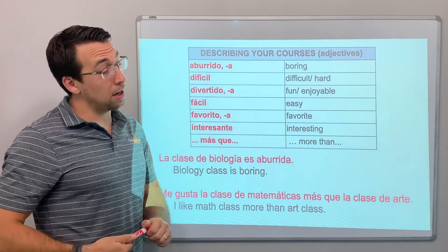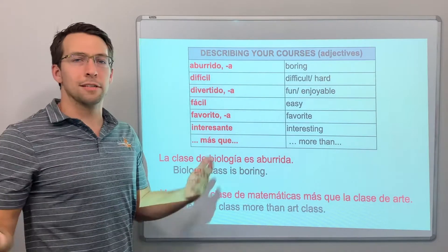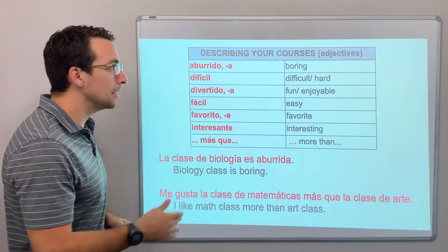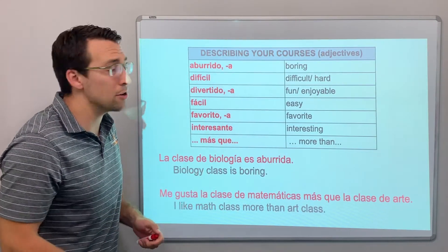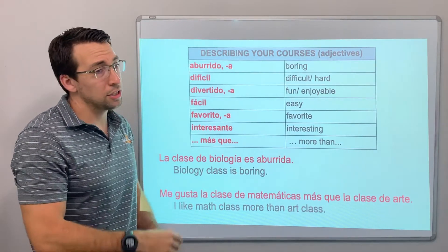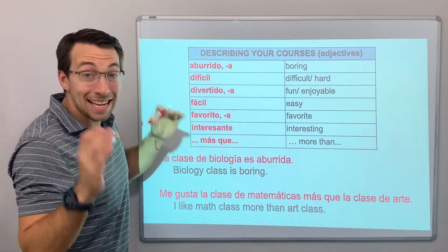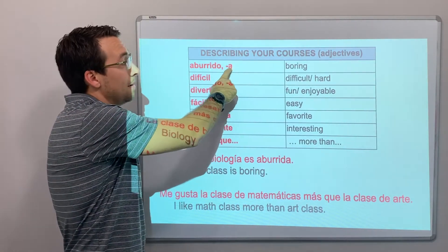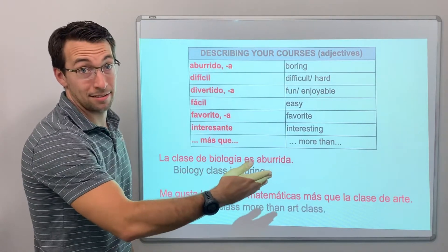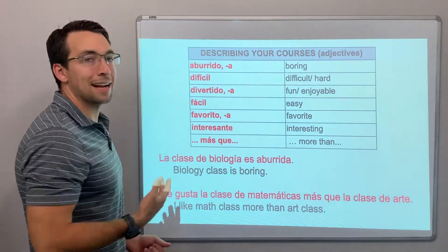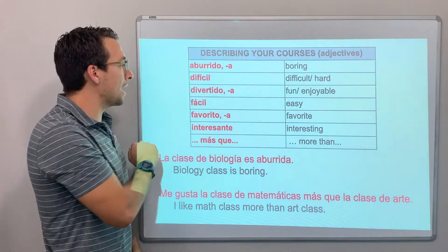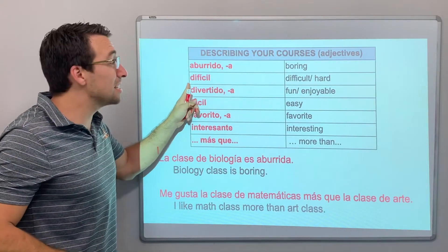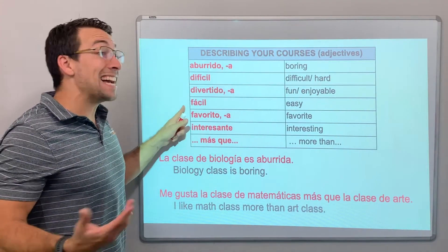If you're describing your courses — biology is the worst, Spanish is the worst, it's so boring. El español. La clase de español es aburrida. 'Aburrida' describes the class, and class is feminine. La clase de biología es divertida — it's fun. La clase de algebra es difícil — difficult. Fácil — easy.